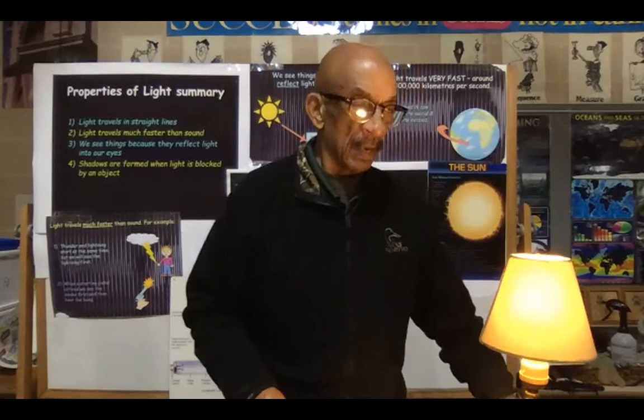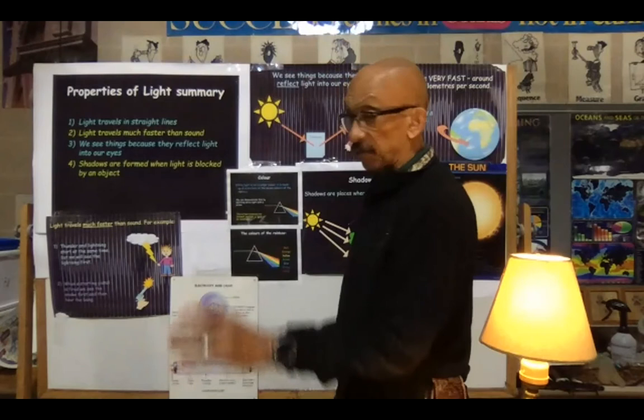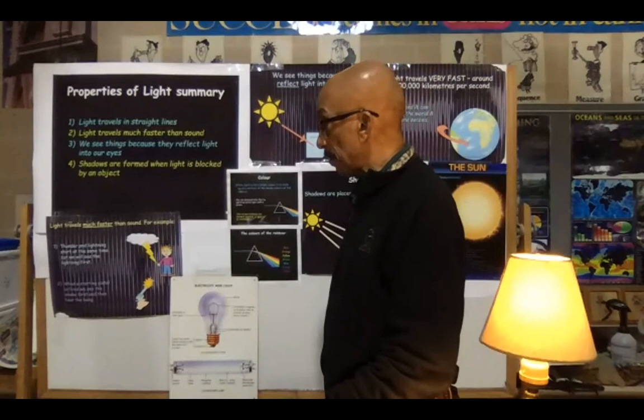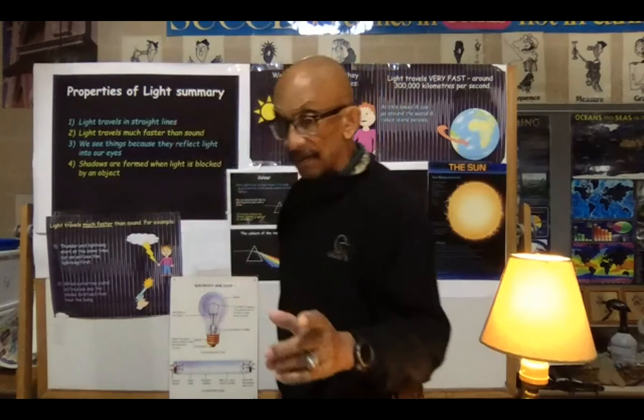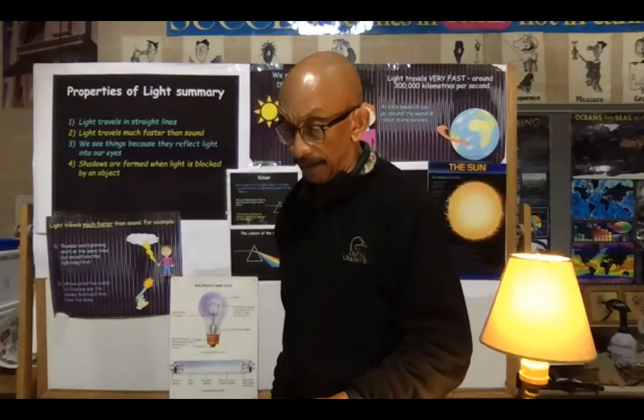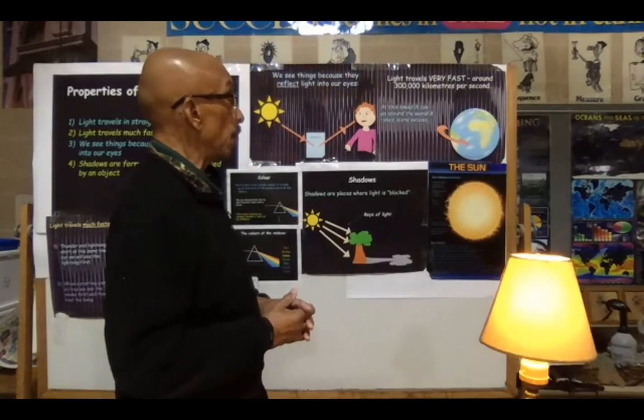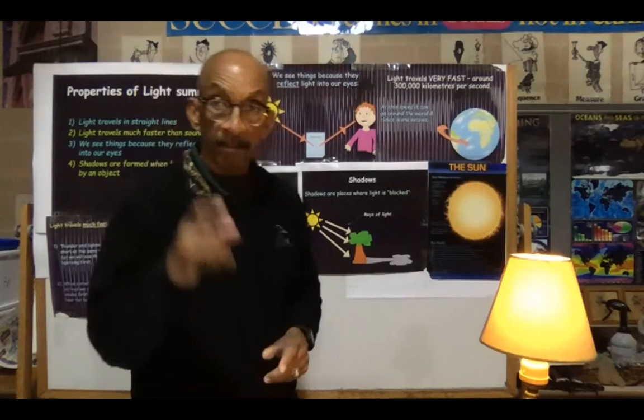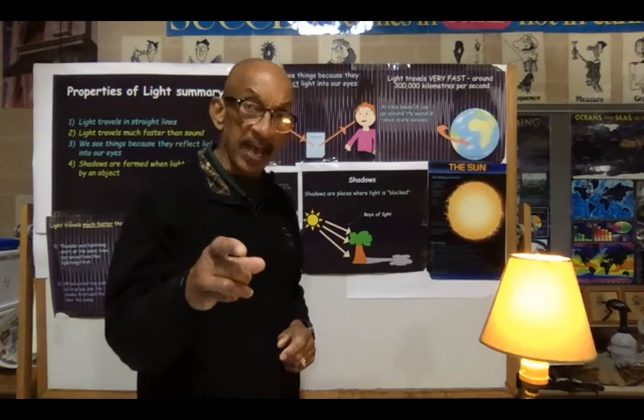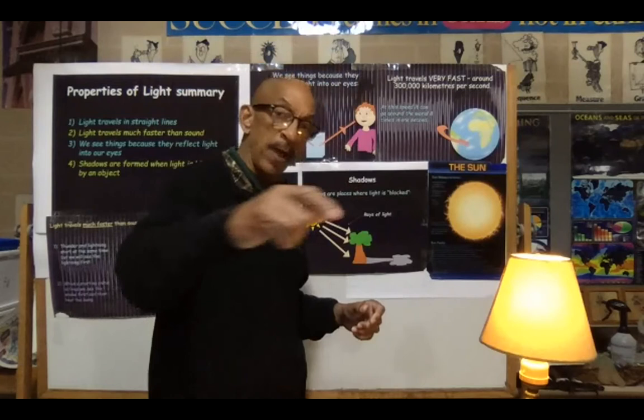Going back to the speed of light — it's very fast, much faster than sound. That's explained by thunderstorms: when lightning happens and you hear thunder, they're actually happening at the same time, but the light of lightning travels much faster than the speed of sound. Light travels at 300,000 kilometers per second. At that speed, in one second, a light ray could go around planet Earth eight times.